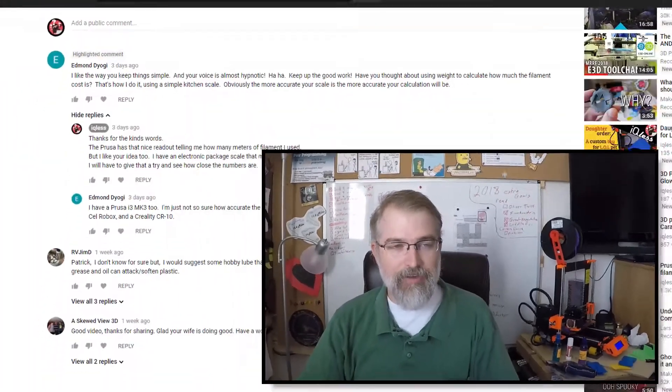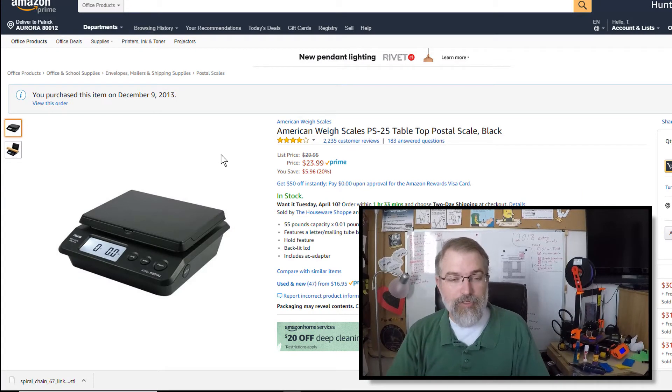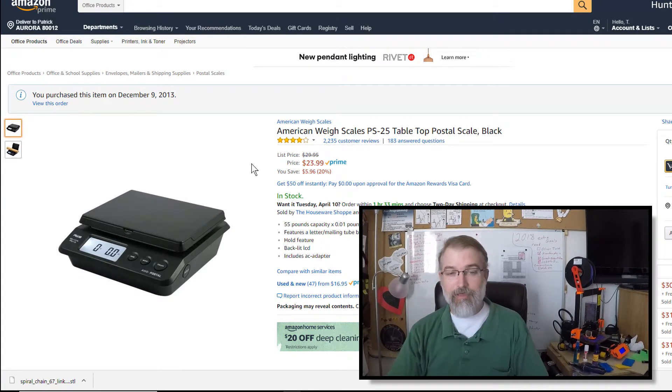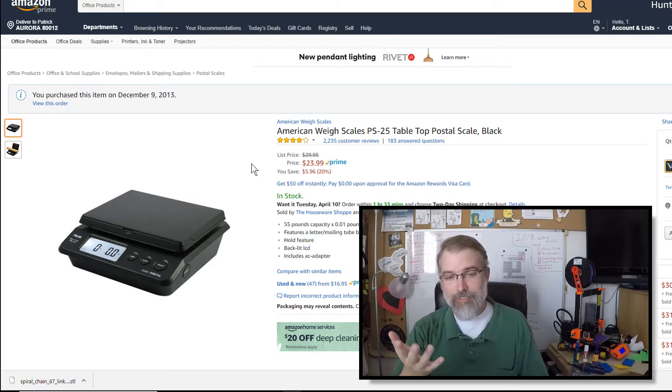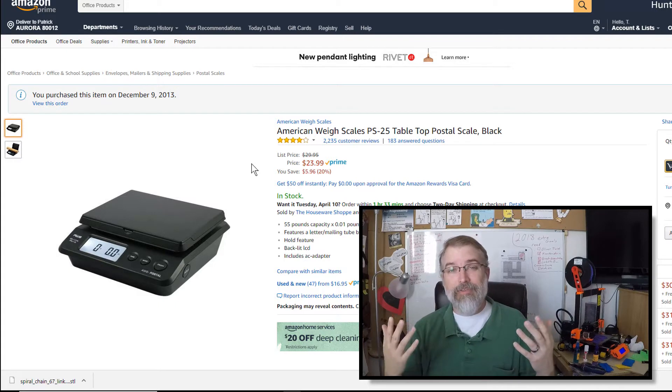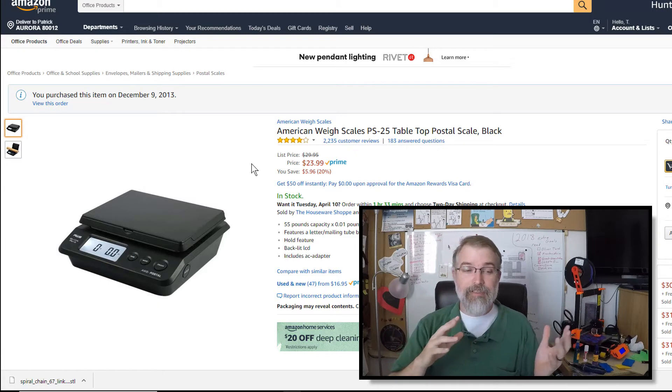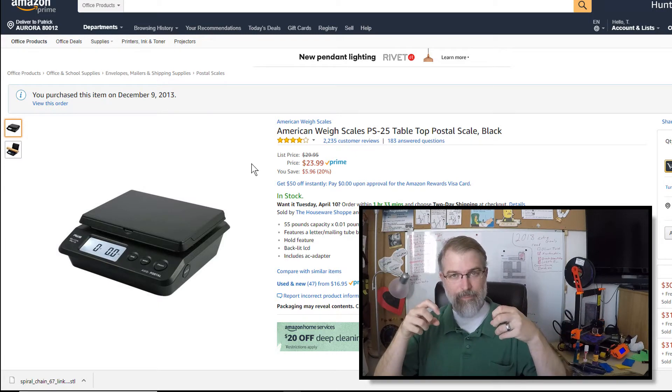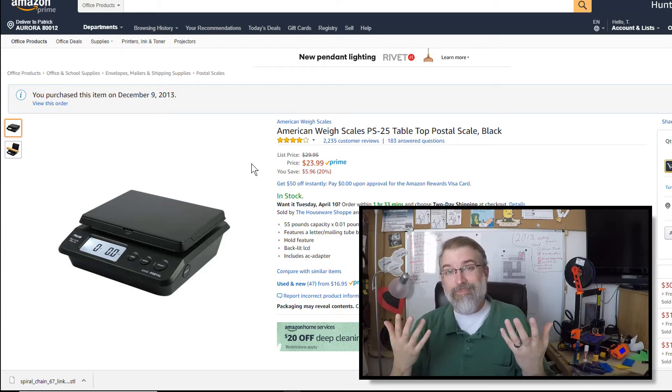I have a scale here I bought years ago. I think I bought it in 2013 that I use for mailing packages. And here it is on Amazon - I guess they still sell it. And it's the American Way scale PS 25. I forget how much I paid for it, but it looks like it's going for about under 25 bucks right now. And it's worked pretty well. I've mailed all kinds of things with it with no complaints. So I think it's going to be accurate enough. That's the scale I'm going to be using. And I also have some masses here so I can kind of test the scale to see how accurate before I even start putting filament on it. But let's go see what I can find out.